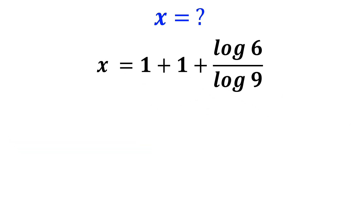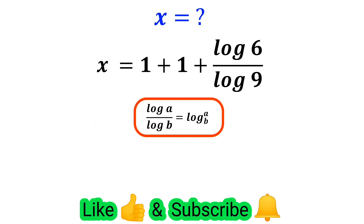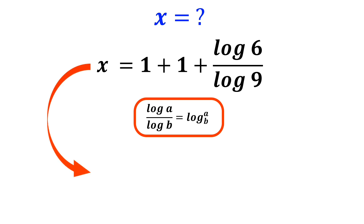According to the rules of logarithm, log of a divided by log of b is equal to log of a with base b. So we can write this equation as x equals 2 plus log of 6 with base 9.